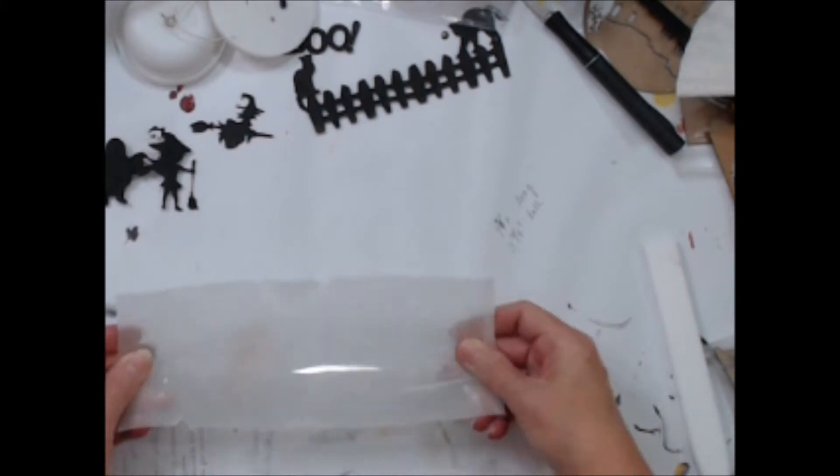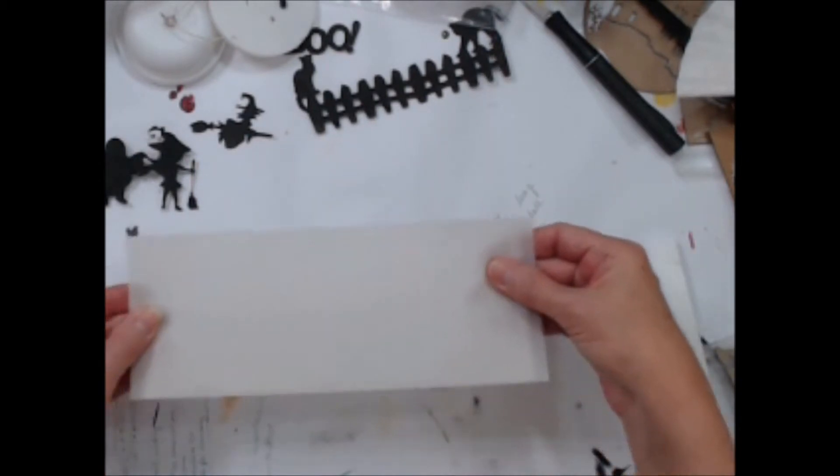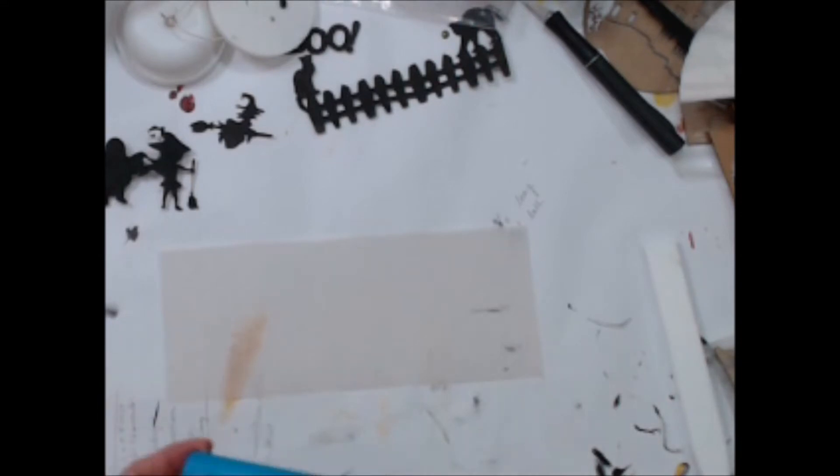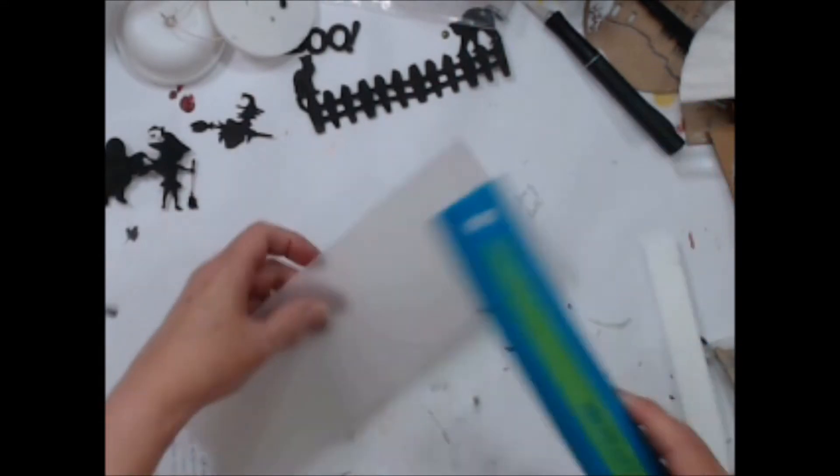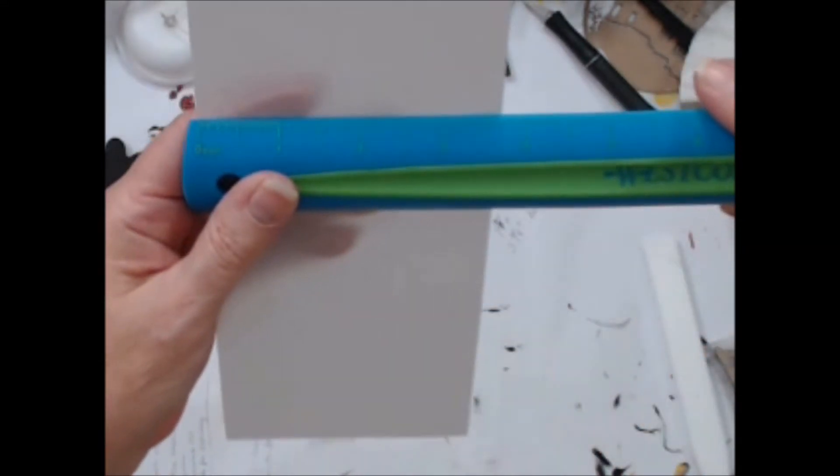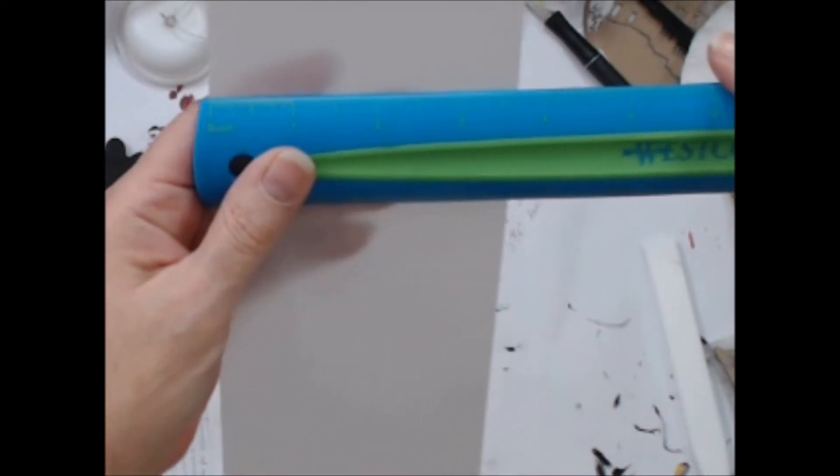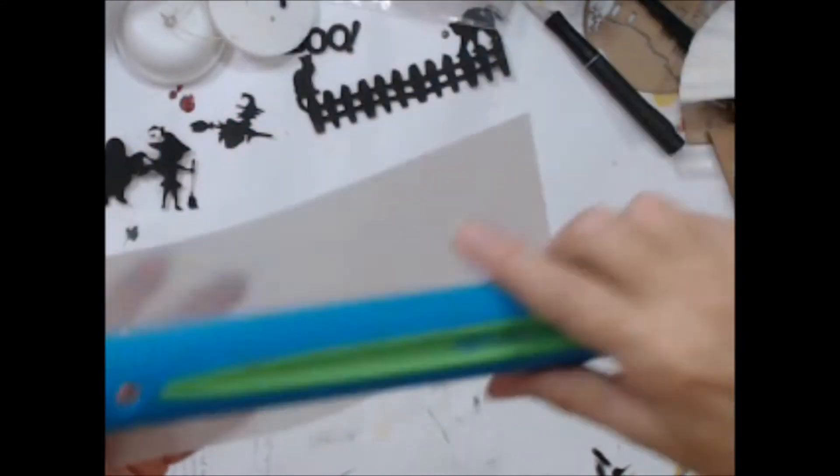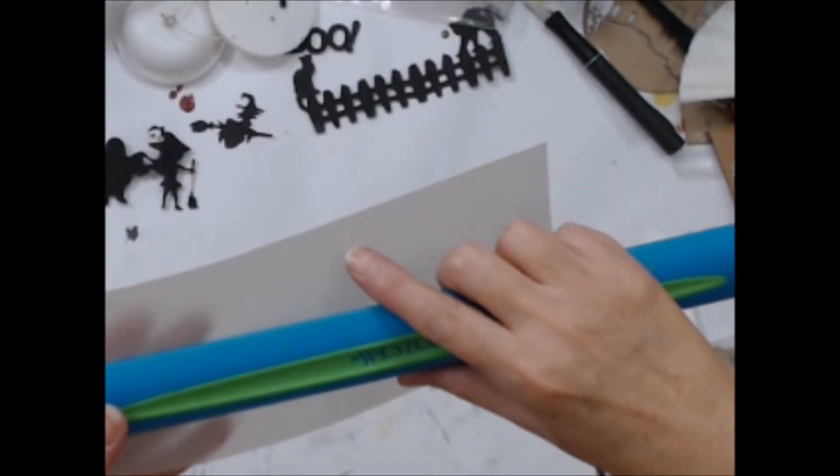The first thing I did was cut a piece of 48-pound translucent parchment paper to the same size as the acetate piece I removed from the candle. It measured 3 ¾ inches tall and 9 ¼ inches long, which includes a ¼ inch overlap. You could also use a piece of clear plastic or acetate if you don't have parchment paper.